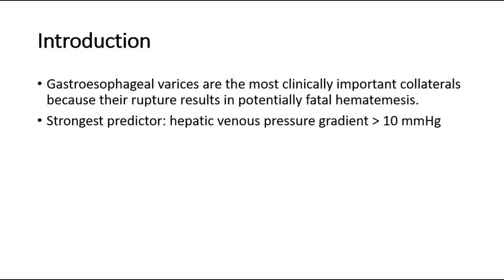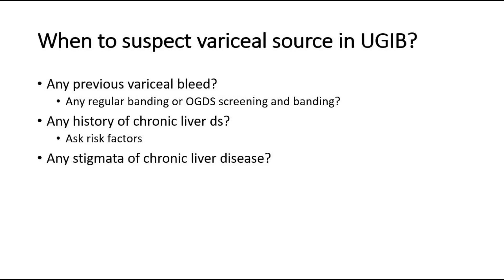There are two subtypes of upper GI bleeding: variceal cause and non-variceal cause. In this video, I will focus on the variceal cause. When do we suspect a variceal cause in upper GI bleeding? We ask the patient if they had any previous variceal bleeding, or whether they go for regular banding or OGDS screening. We also ask about chronic liver disease, risk factors such as chronic alcohol ingestion, or underlying hepatitis B or C, and look for any stigmata of chronic liver disease.